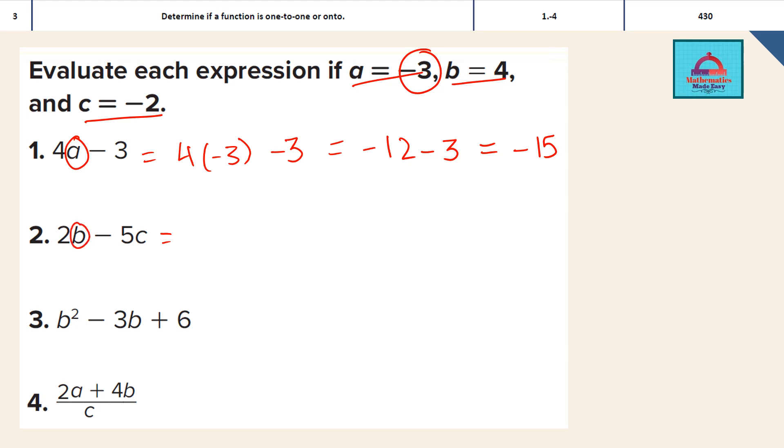Let's simplify the next question. Here we have two variables b and c. We are going to replace the value of b with 4 and c with minus 2. So 2 multiplied with b, that is 4, minus 5 multiplied with c, that is minus 2. 2 multiplied with 4 gives me 8. Minus 5 and minus 2 on multiplication will give me plus, and 5 multiplied with 2 is 10. So 8 plus 10 gives me 18 as the answer.